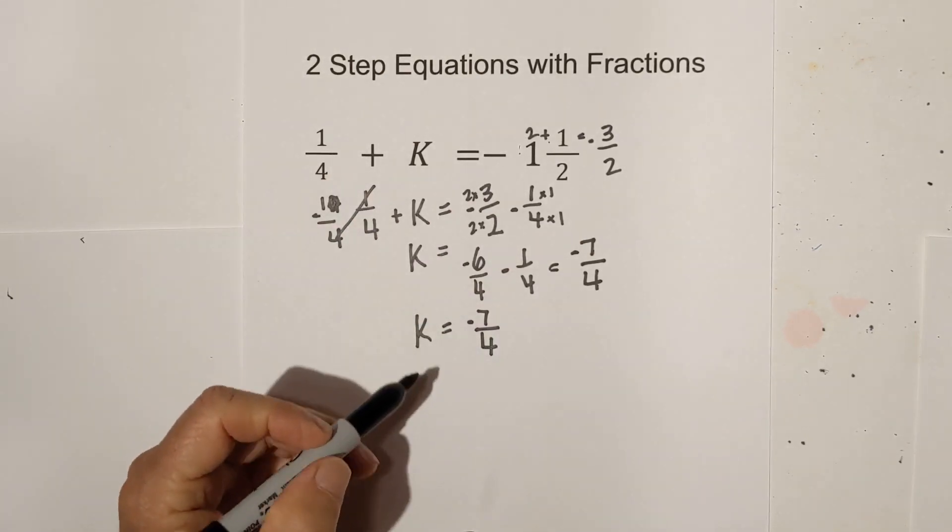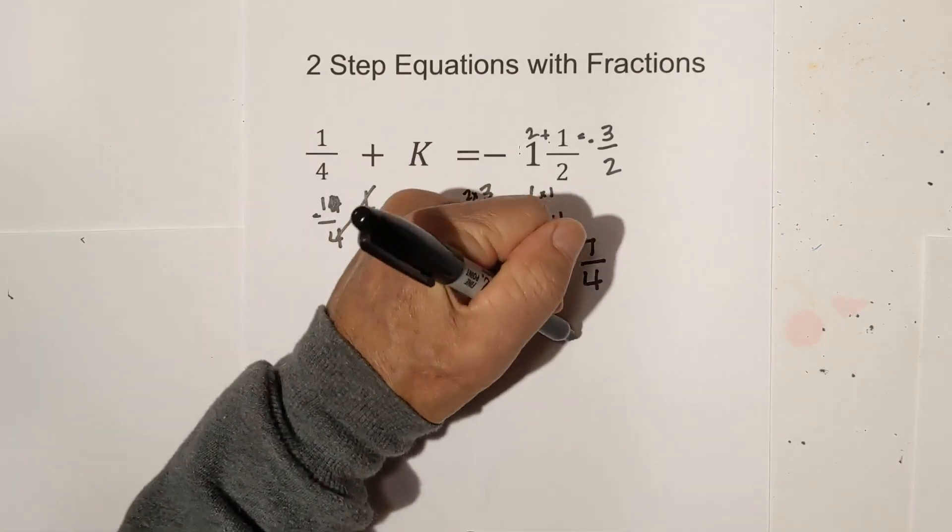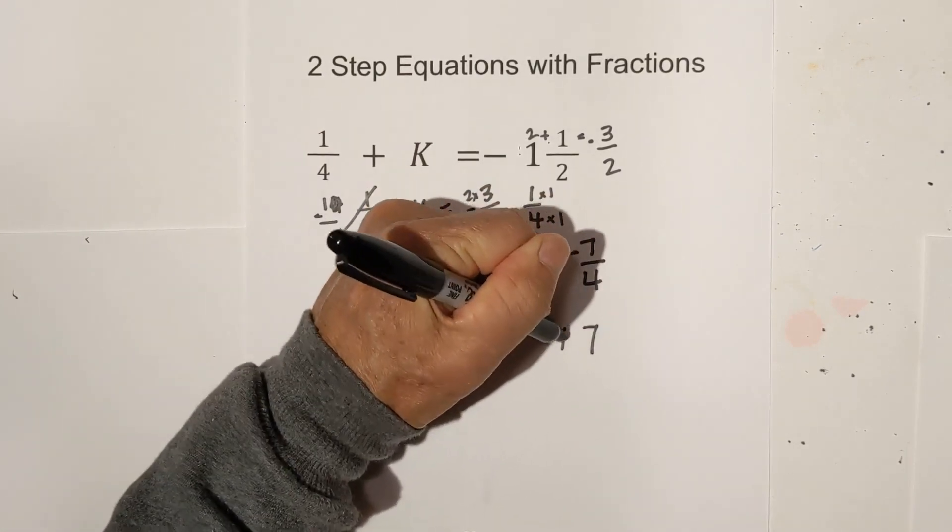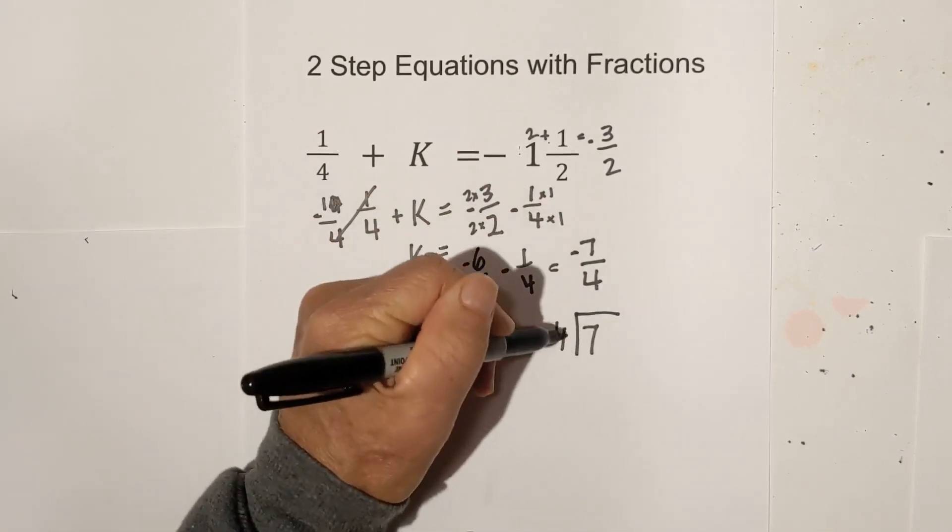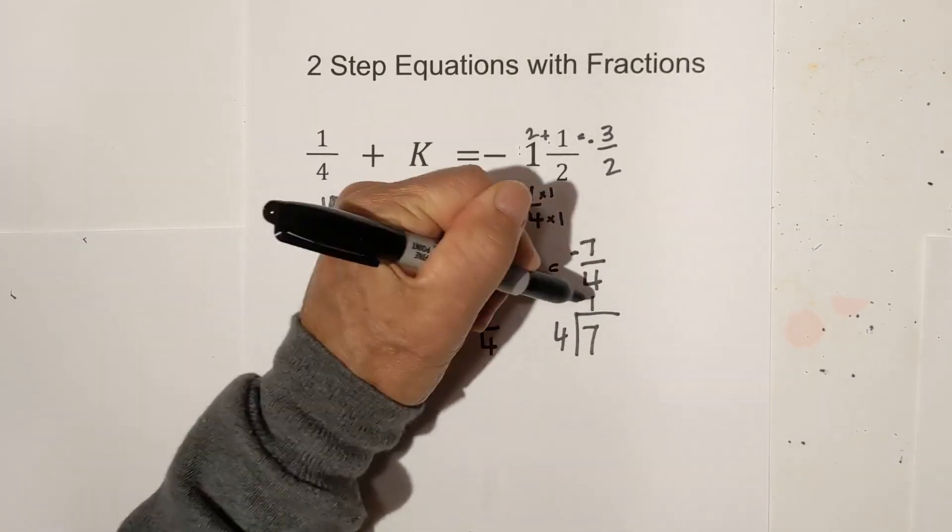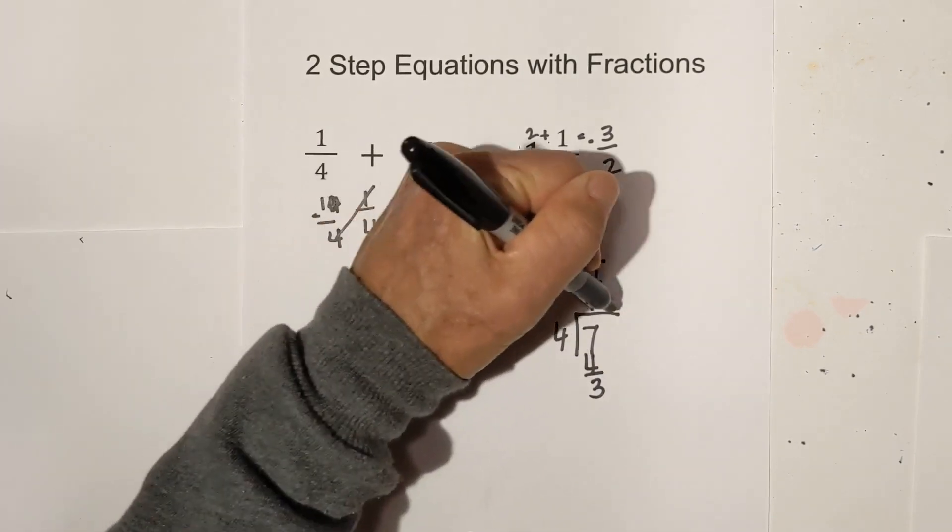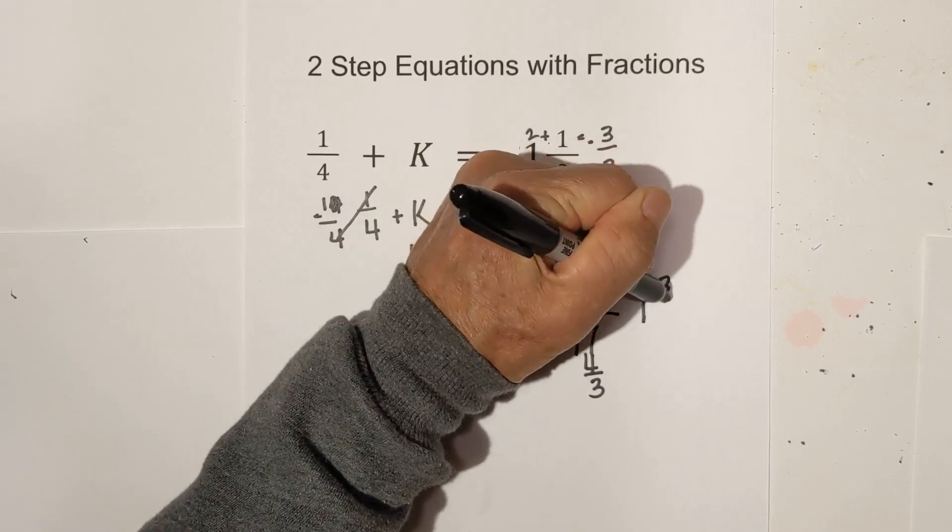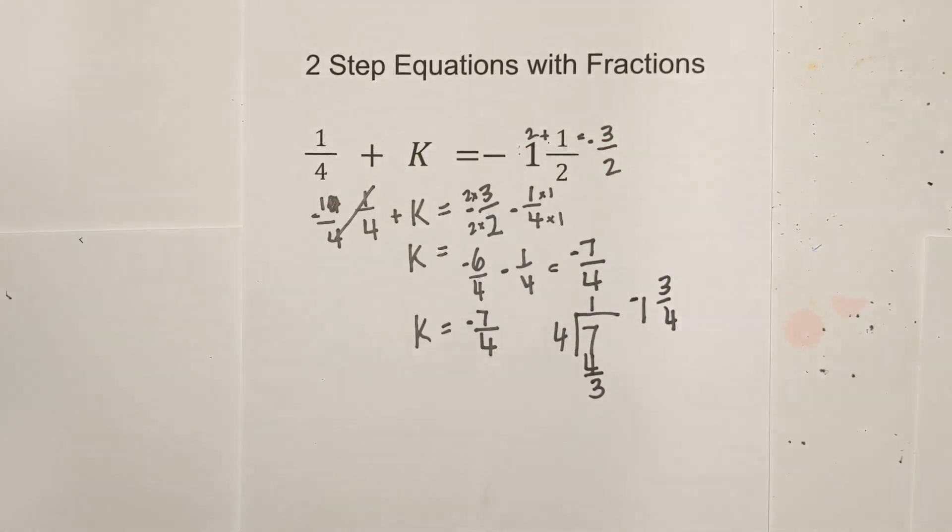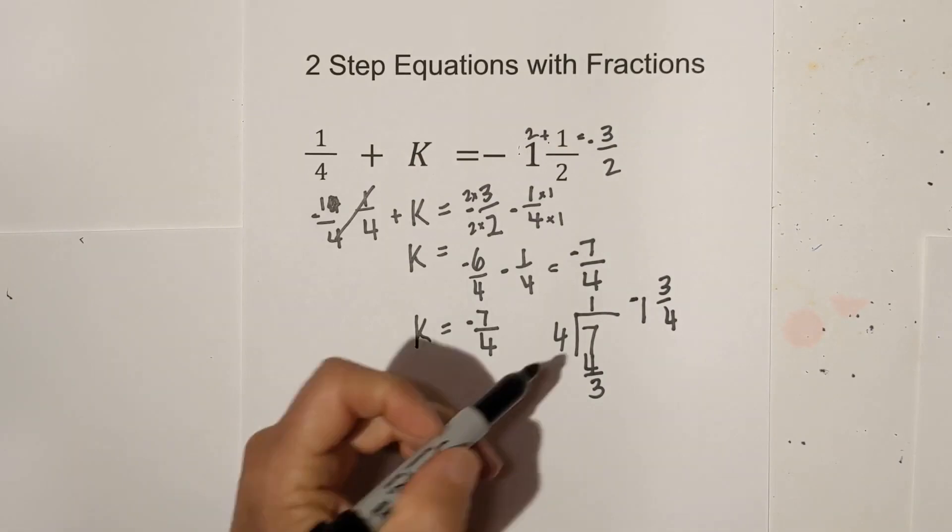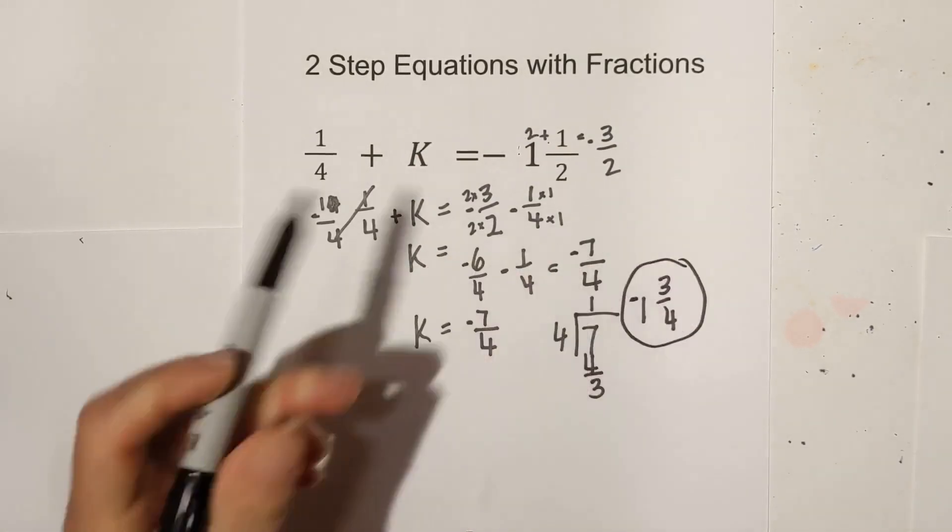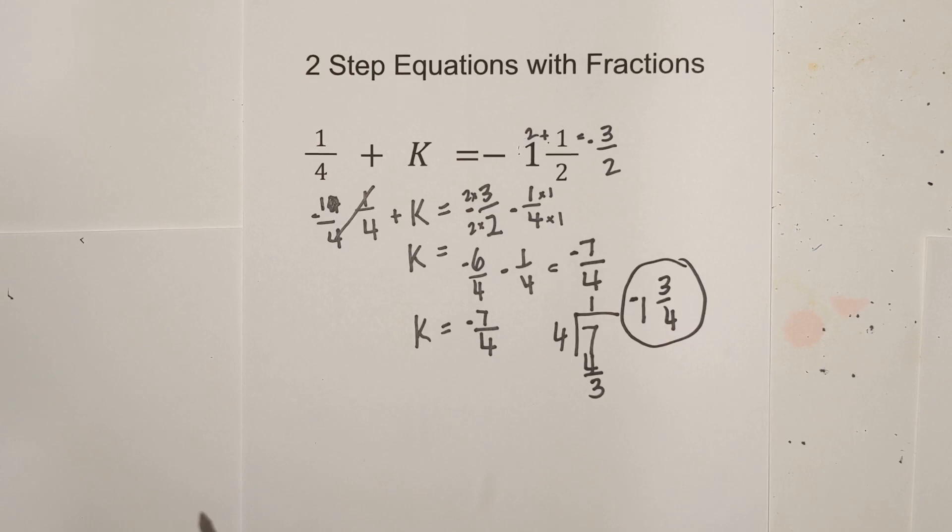Or if you'd like, you can convert this into a mixed number. You take 7 divided by 4. 4 goes into 7 one time. You have 3 remaining. So it will be 1 and 3 fourths, and it is negative. So there we go. The first type of two-step equation with a fraction. Let's work another example.